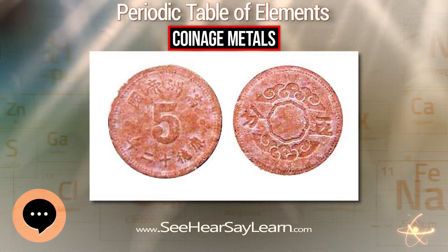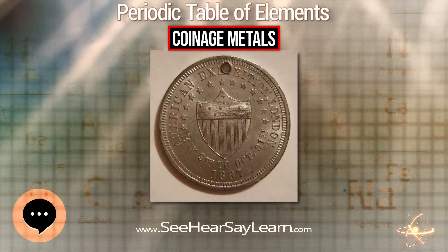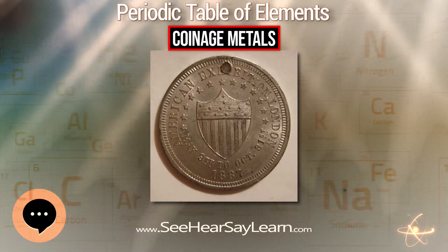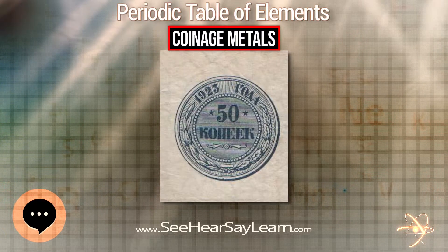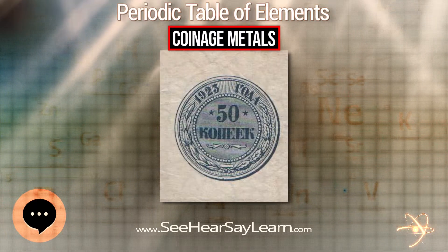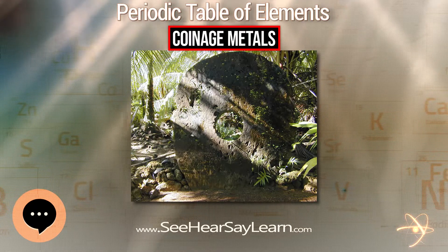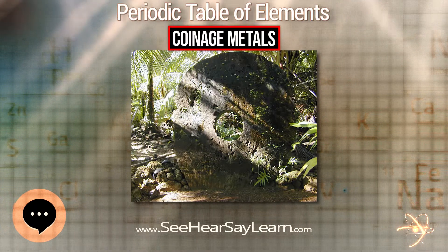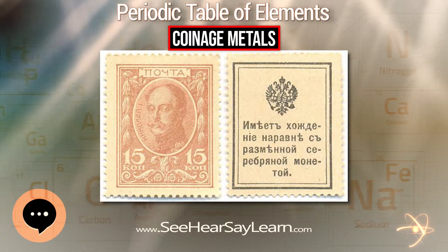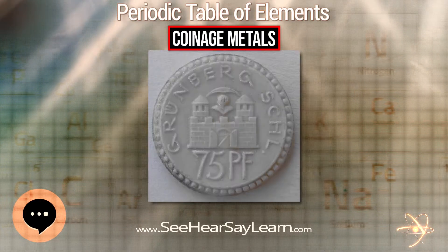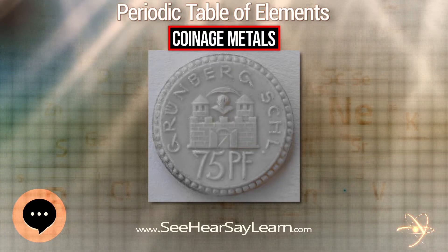Some metals like manganese have occasionally been used in coins but suffer from making the coins too hard to take an impression well. When minting low denomination coins especially, there is a risk that the value of metal within a coin is greater than the face value. This leads to the possibility of smelters taking coins and melting them down for the scrap value of the metal. Pre-1992 British pennies were made of 97 percent copper.